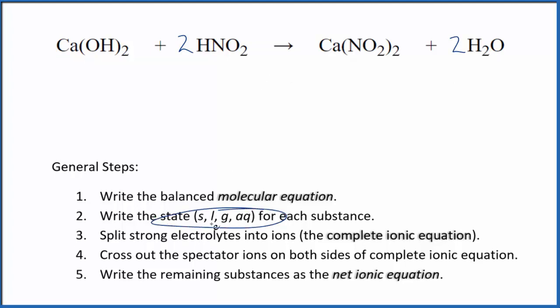Now we write the state for each substance. That looks like this. Calcium hydroxide isn't really soluble, but it is considered a strong base. So we're going to split this apart into its ions. Nitrous acid, it's a weak acid. It will dissolve, but it's not going to split apart into its ions because it's a weak acid, a weak electrolyte.